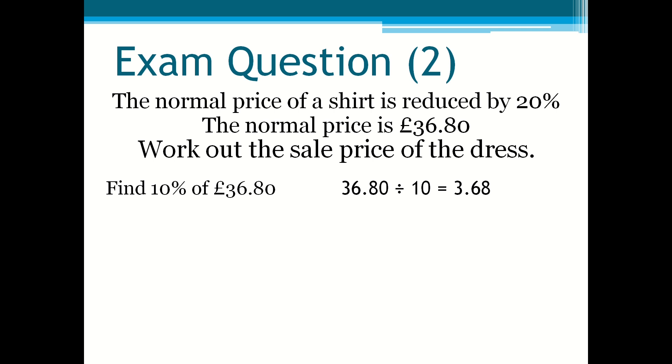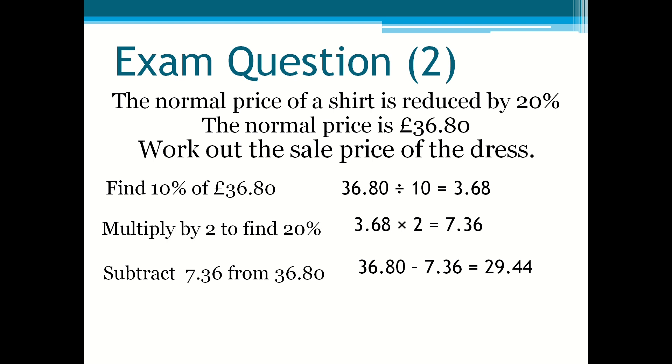So that would be £7.36, or you could go straight away by dividing 36.80 by 5 to get 20% straight away. Then you subtract that £7.36 from £36.80 and you'll get 29.44. So the sales price is £29.44.